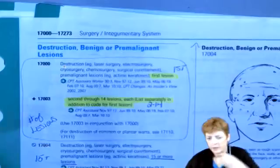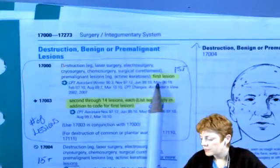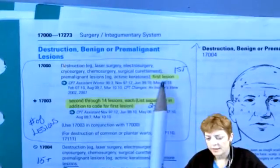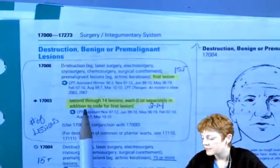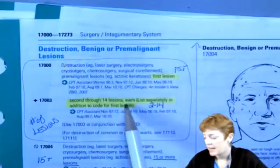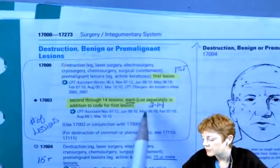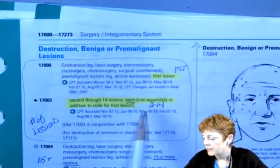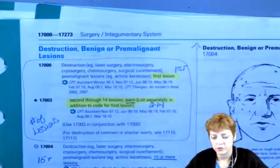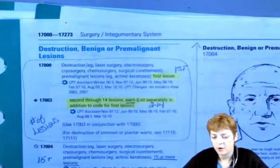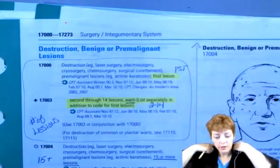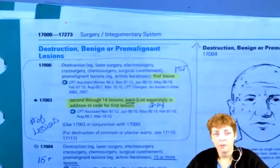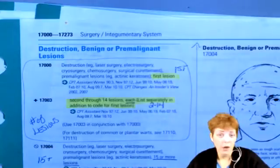Here we see where the bubbling and highlighting helps. What I have highlighted after the semicolon is 'first lesion,' and then the indented code says '2nd through 14.' Because it uses the word 'each,' if you have, let's just say, 12 lesions total, 17000 will be what you use for the first lesion, and then 17003 you'll report times 11 to cover the individual ones. I'd put an 11 in that column.